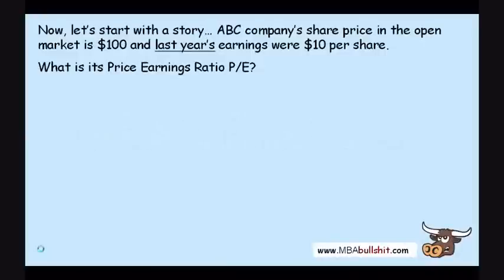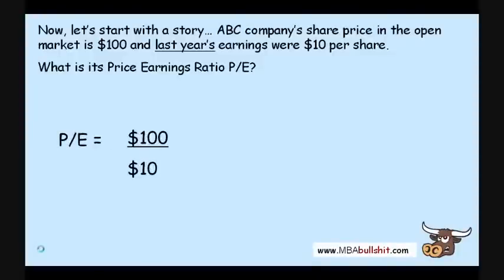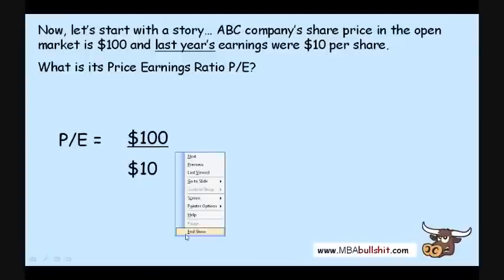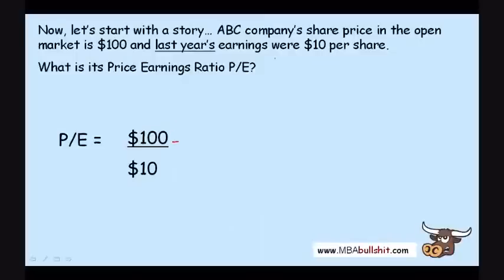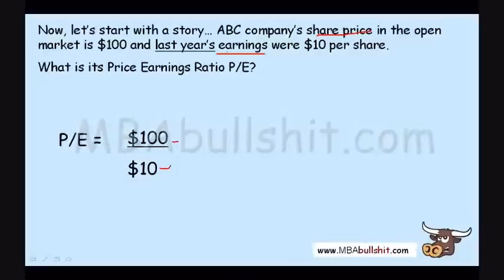What's more important is how you interpret, analyze, and understand the ratio. The Price Earnings Ratio here is simply $100 divided by $10. The $100 is the share price, and the $10 is last year's earnings — last year's earnings declared, with the news coming out this year about last year.